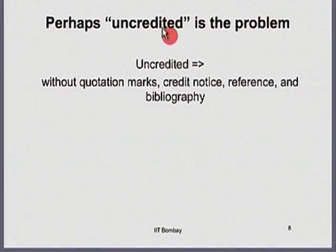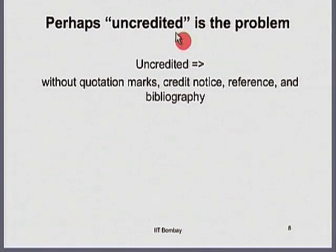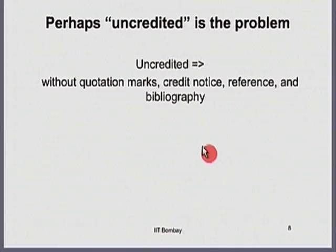Maybe the problem is this word uncredited — we are not giving reference. Uncredited means no quotation marks, no credit, no attribution, no reference, no bibliography, or some combination of these. So suppose we do credit — are we safe? This is something I want to spend time on because a lot of people have certain ideas which are not acceptable in the overall scientific community.